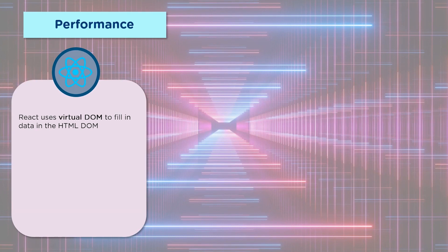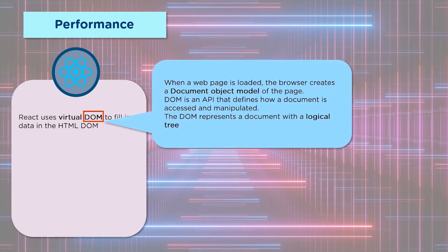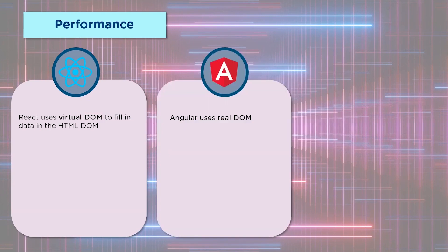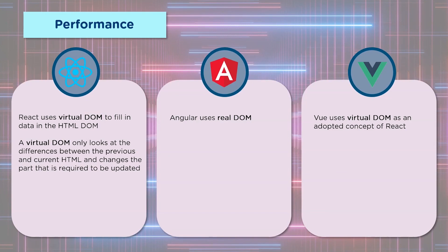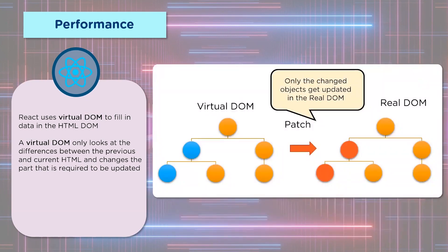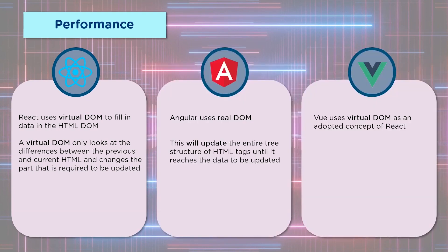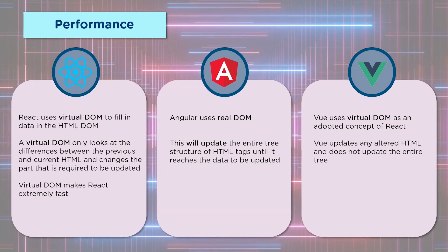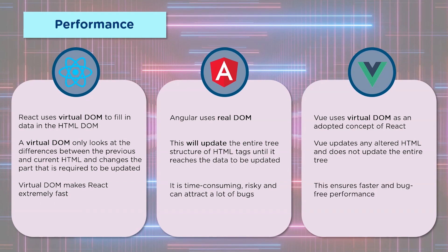React makes use of a virtual DOM. DOM is an API developed by W3C — it stands for Document Object Model and defines how the document is accessed and manipulated. This DOM parser converts the HTML code into an inverse balanced tree structure. React uses the virtual DOM, Angular uses the real DOM, and Vue uses the virtual DOM as well. The virtual DOM only changes the parts that need to be updated, while Angular updates the entire tree structure regardless. Vue similarly only updates what has changed. Since no time is spent on unnecessary changes, React is extremely fast, while real DOM updating is time-consuming, risky, and error-prone. Vue also ensures faster and bug-free performance.